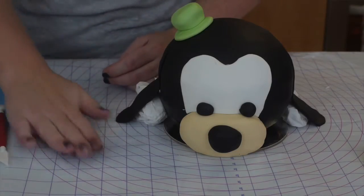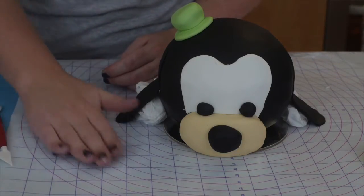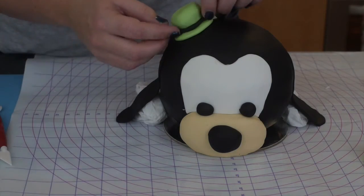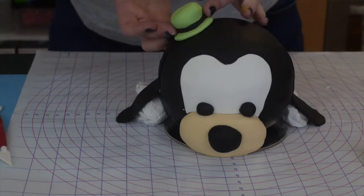We're going to smooth that out and make sure we have the shape that we want, and then just finish it off with a little bit more black fondant rolled out into a snake shape and rolled around the base of the hat so he has his little band on.